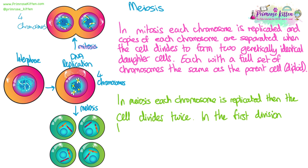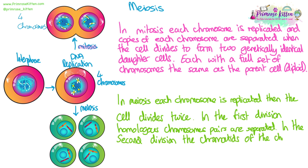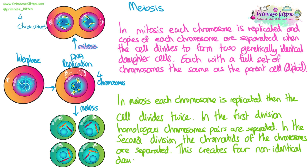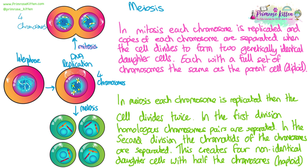In meiosis we still start with each chromosome being replicated, but the cell divides twice and there's no replication in the middle. In the first division homologous chromosomes split up — we split up the pairs of the chromosomes. Then in the second division the chromatids of each chromosome are separated. This creates four non-identical daughter cells because they didn't just receive identical copies — they actually got half the number of chromosomes from the original cell and a random mixture of different parental copies. So these cells are described as haploid.